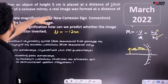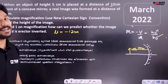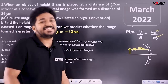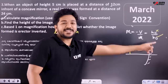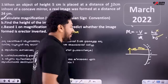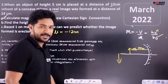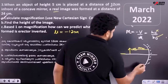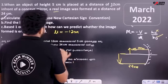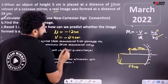The real image was formed at a distance of 24 cm. The real image is on the left side. So v is minus 24 cm.